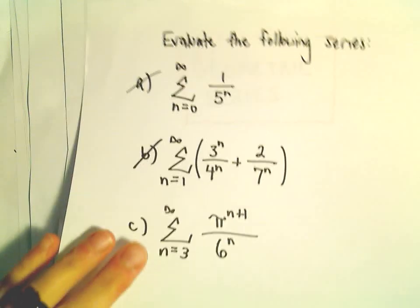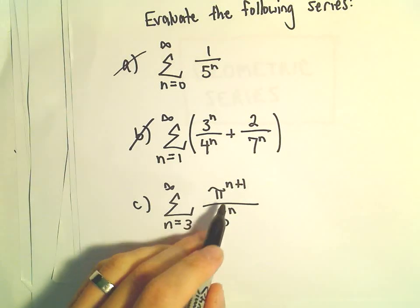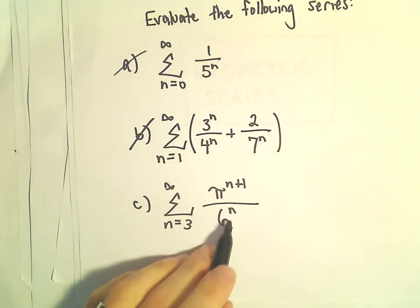So one more example here of finding the sum of a convergent geometric series. Here we've got the series from n equals 3 to infinity of pi to the n plus 1 over 6 to the n.